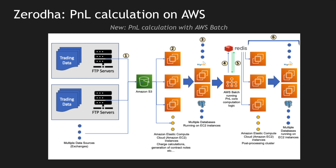Once data is persisted into the Redis cluster, it is moved back into the database by another fleet of EC2 instances that performs post-processing. After the AWS Batch processing, the data is raw and needs to be filtered based on specific logic — customer-specific logic or filtering of unwanted data. All of that is done in the post-processing EC2 instances, and the results are pushed back into the MySQL and Postgres databases. This is the complete P&L calculation component moved from the on-premise data center into AWS.